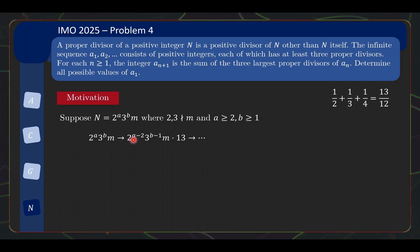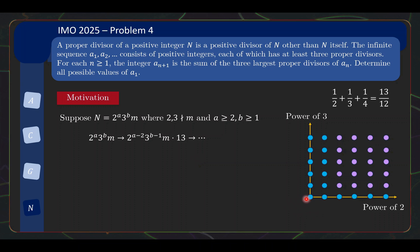If a/2 is at least 2 and b−1 is at least 1, you can repeat this again and so on. Thinking visually, with powers of 2 on one axis and powers of 3 on the other, any dot with coordinates above (2,1) will move by losing 2 powers of 2 and 1 power of 3, continuing until you reach the boundary blue dots. These dots on the edge are either odd or non-multiples of 3, which we'll study in the solution — and spoiler: they are not going to work.